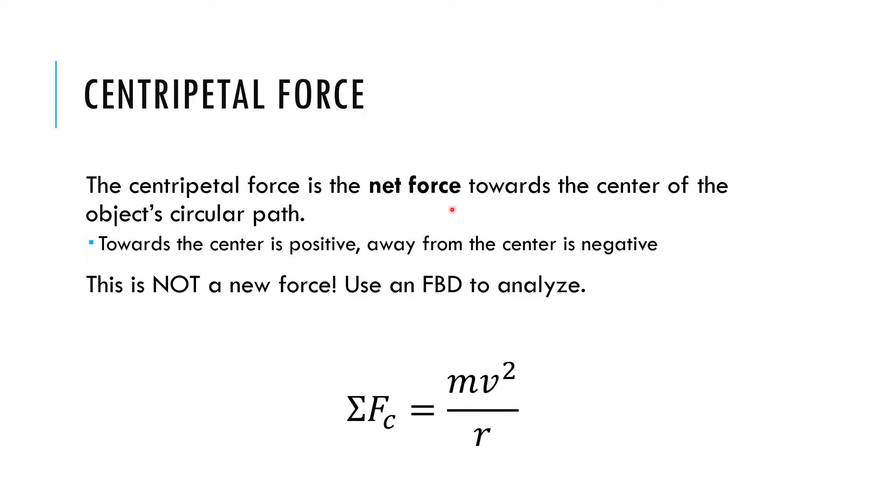But just like all of our other examples of forces, the net force is not its own force. You don't draw the net force on an FBD. You use an FBD to figure out the net force. So just like your data booklet says F equals ma, which is terrible, we want to say sigma F, the sum of all forces equals ma to be a little more thorough. Same idea here. This is how I would encourage you to think about this. Because the sum of all forces towards the center of the circle is equal to mv squared over r. That's our equation for centripetal force.